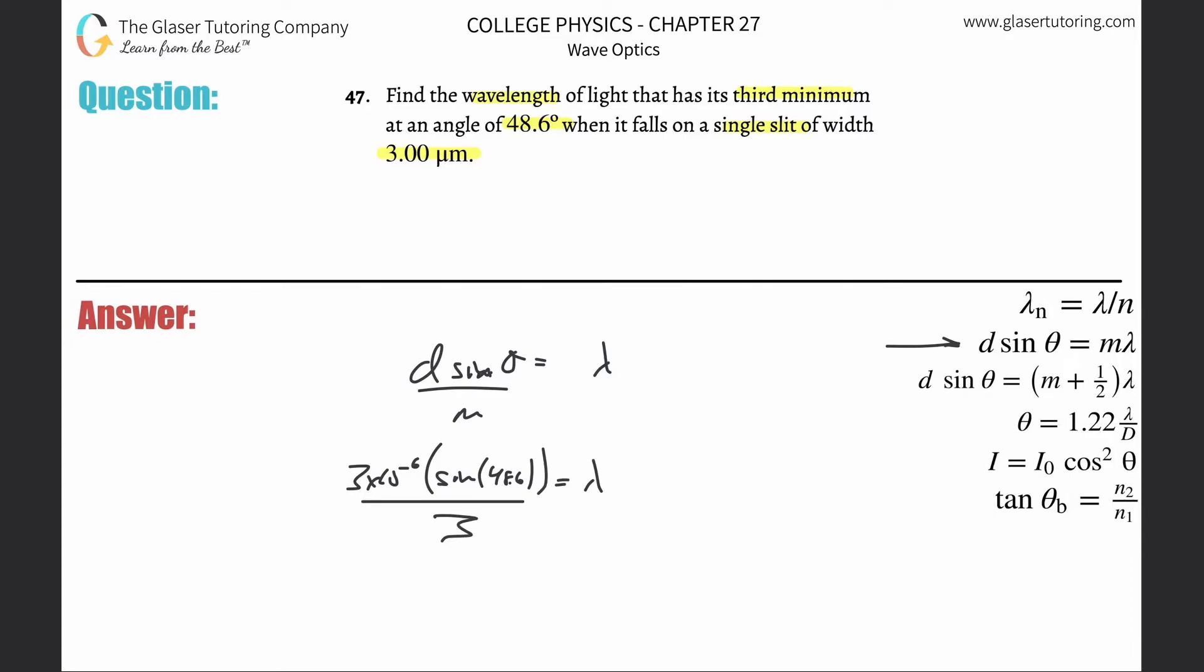Three times 10 to the minus six multiplied by sine of 48.6. Please remember your calculator being in degree mode, and then divide that by three. Seven point five zero times 10 to the minus seventh, and that is in terms of meters.